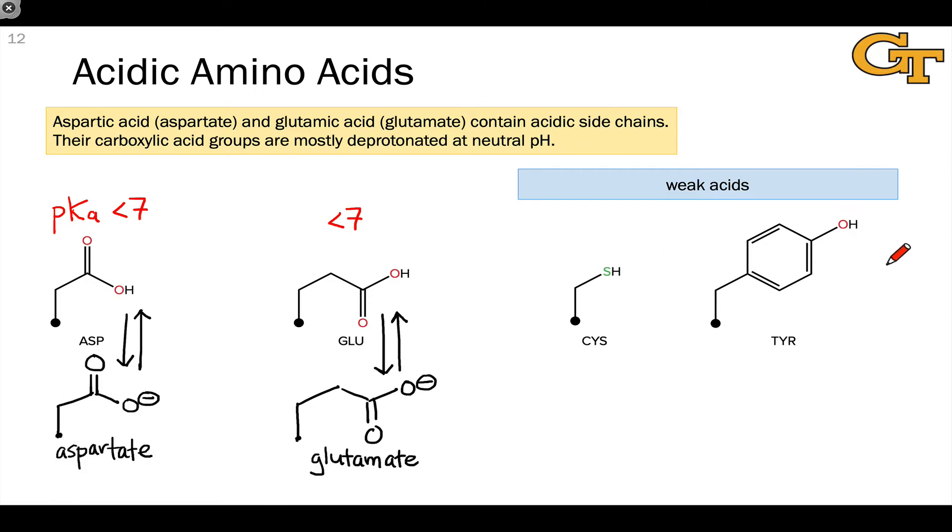The side chains of cysteine and tyrosine are weak acids. If we look at the pKa's of those side chains in the amino acids themselves, we've got 8.18 for the thiol group in cysteine and about 10 for the pKa of the hydroxyl group in the phenol ring of tyrosine.